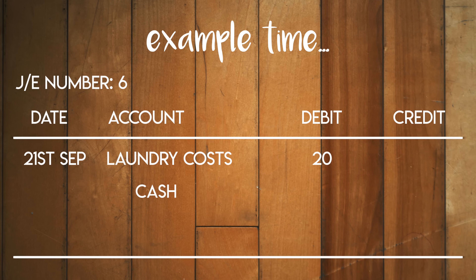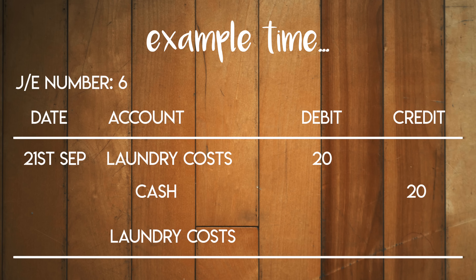Cash is an asset — that's the A in DEALER, so credits decrease it. We need to indent the account description for cash to help us identify it as a credit, and we're going to put $20 in the credit column. Finally we need to give this journal a description — let's call it 'laundry costs week one.' So now that journal is all prepped up, it's ready to be posted in the general ledger.